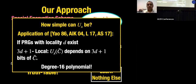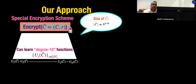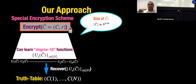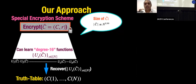As a consequence, you need an encryption scheme that hides everything about the circuit but lets you learn specifically designed degree-16 functions. These functions are chosen so that they reveal only the truth table and nothing else — that's the security property. So if we can build such an encryption scheme computing degree-16 functions on C̃, we'd be done.